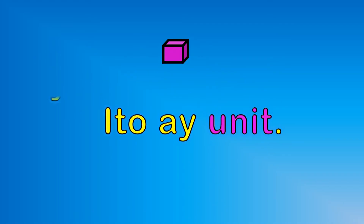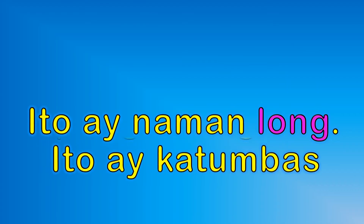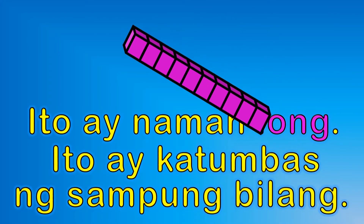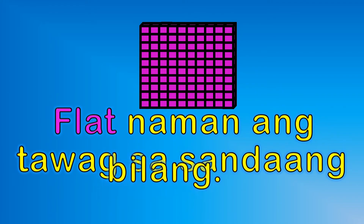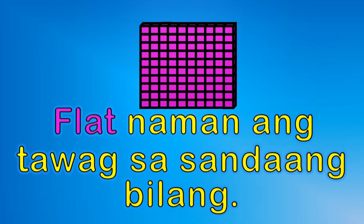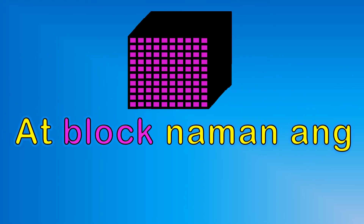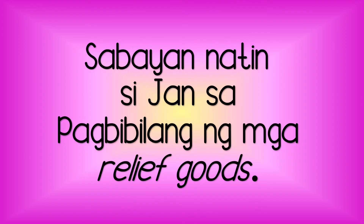Halina at balikan natin ang isang maliit na kahon. Ito ay unit — katumbas ng isang bilang. Ito naman ay long — katumbas ng sampung bilang. Flat naman ang tawag sa sandaang bilang. At ang napakalaking kahon na iyan ay tinatawag na block — block naman ang tawag kung saan libo ang bilang. Sabayan natin si Jan sa pagbibilang ng mga relief goods.